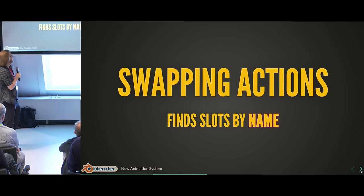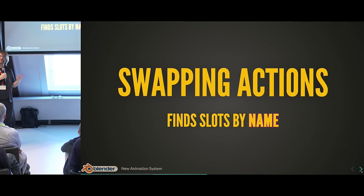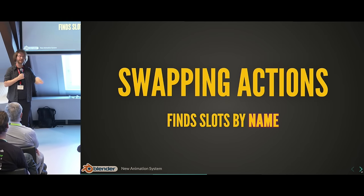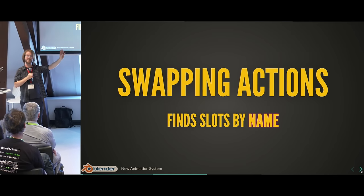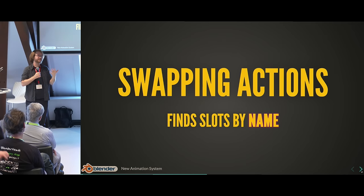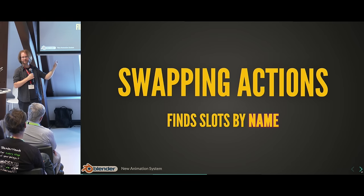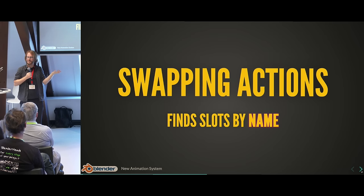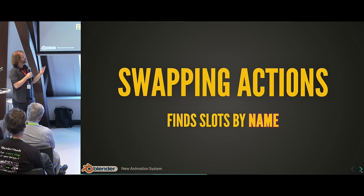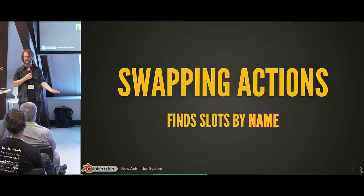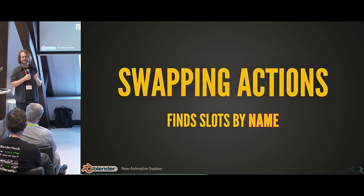Can we make slot selection more convenient? You can absolutely manually select an action and then manually select a slot every time. But in many cases there's a fairly obvious slot that should be assigned to a particular object. Taking the fox and robot example: if you assign that action to the fox, it's fairly obvious it should probably be animated by the fox slot. So when you assign an action to something, if there's an obvious slot determined primarily by name, it will automatically assign. You can override that afterwards.